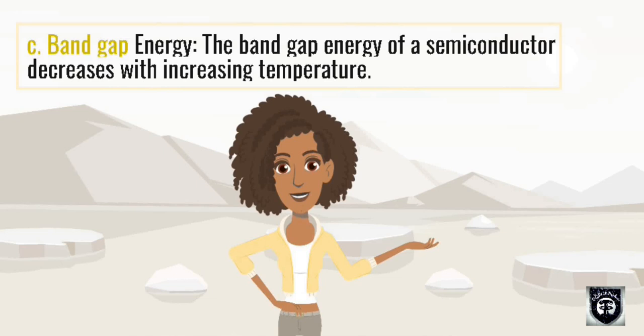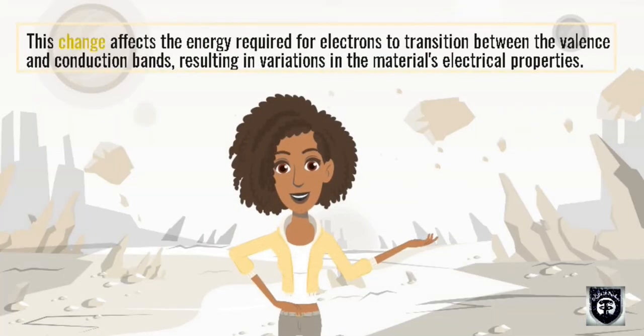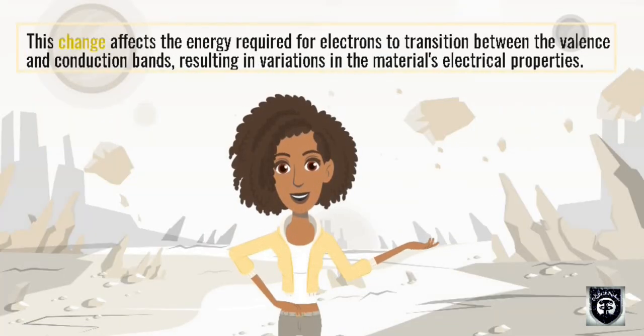Band gap energy: The band gap energy of a semiconductor decreases with increasing temperature. This change affects the energy required for electrons to transition between the valence and conduction bands, resulting in variations in the material's electrical properties.